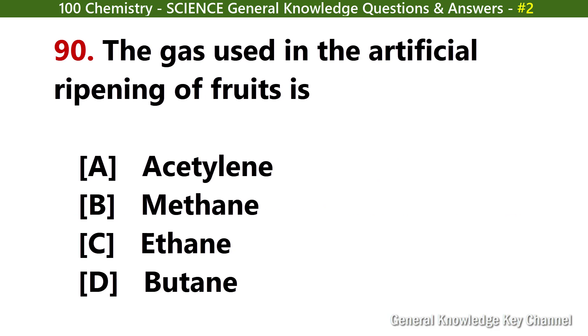The gas used in the artificial ripening of fruits is? Answer A: Acetylene.